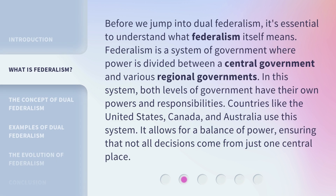Before we jump into dual federalism, it's essential to understand what federalism itself means. Federalism is a system of government where power is divided between a central government and various regional governments. In this system, both levels of government have their own powers and responsibilities. Countries like the United States, Canada, and Australia use this system. It allows for a balance of power, ensuring that not all decisions come from just one central place.